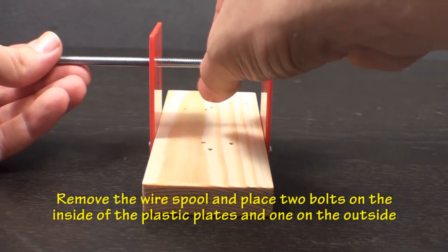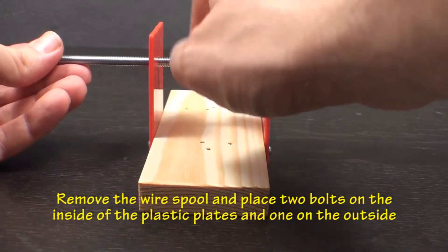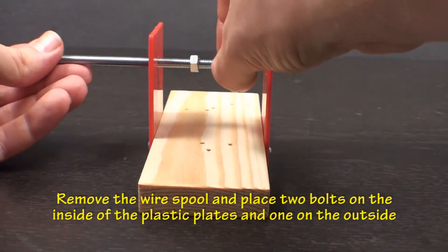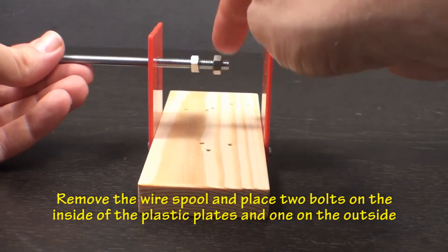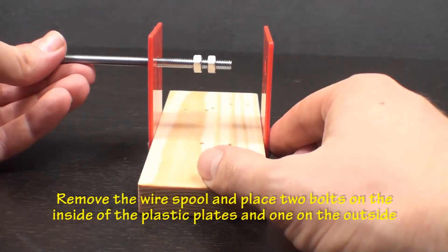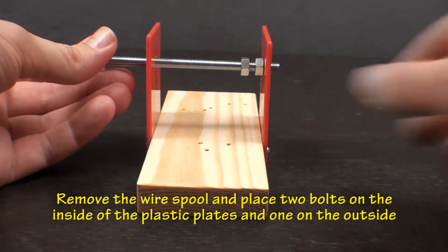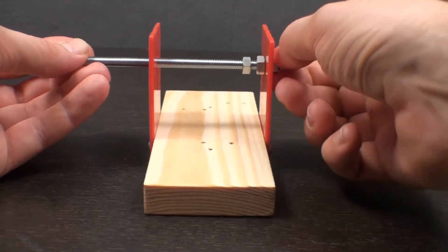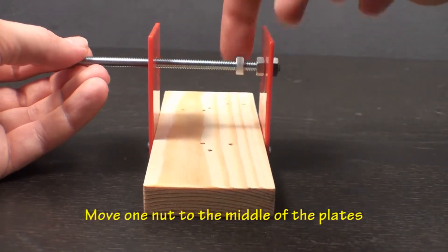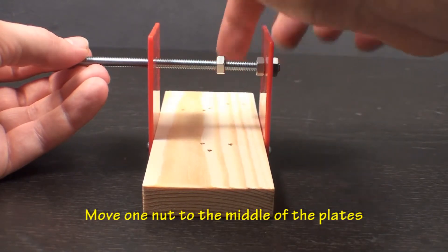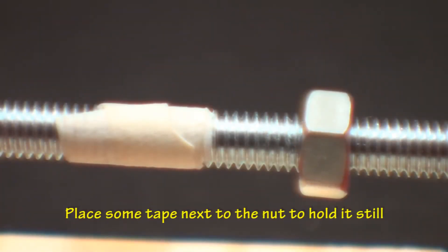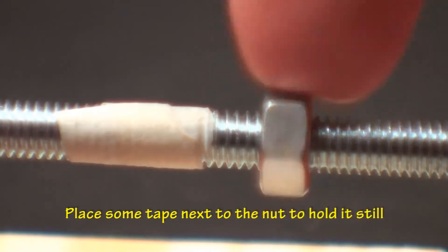Remove the magnetic wire and nuts from the bolt. Screw 2 nuts onto the bolt between the 2 plastic plates and 1 on the outside of the plate. Move one of the nuts to the middle of the bolt. Place a piece of tape next to the nut and screw it on. This will allow the nut to rotate with the bolt.